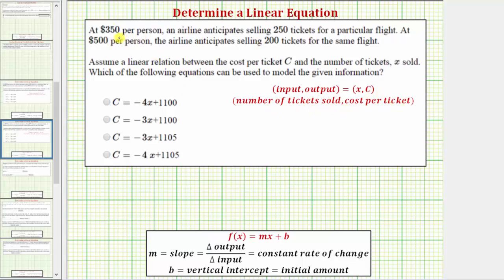So if the cost is $350 per person, 250 tickets will be sold. The ordered pair would be 250 comma 350. Again, the first value is the number of tickets sold, 250. The second value is the cost per ticket. At $500 per person, the airline anticipates selling 200 tickets. So the ordered pair would be 200 comma 500.